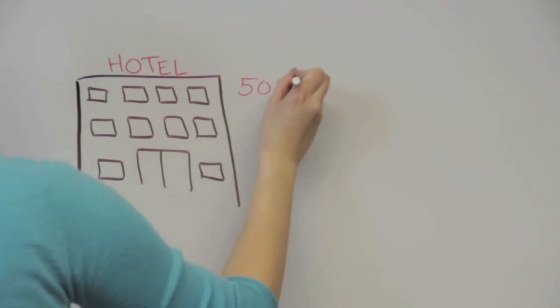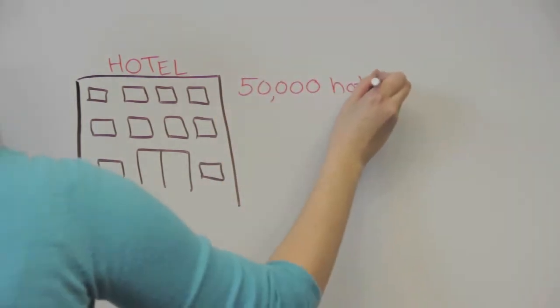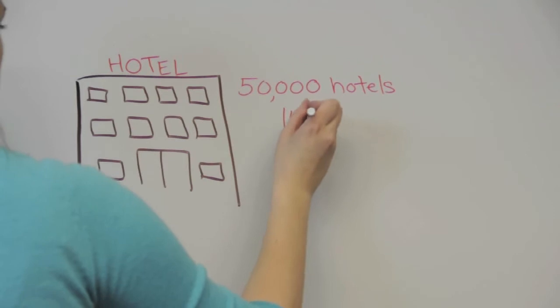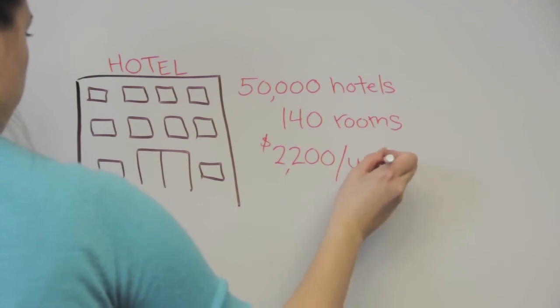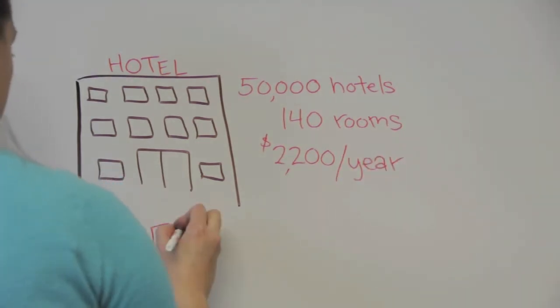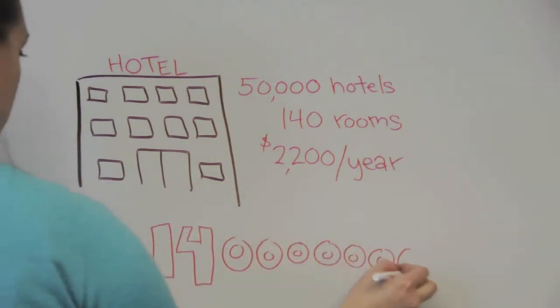In the U.S. alone, there are over 50,000 hotels, each with approximately 140 rooms. And each of those rooms uses about $2,200 worth of energy. That's as much as your entire house. This is all equal to about a $14 billion electric bill.